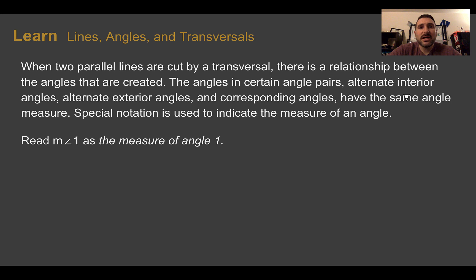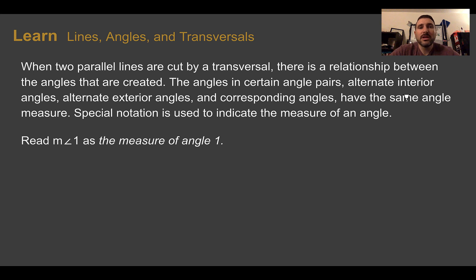When two parallel lines are cut by a transversal, there's a relationship between the angles that are created. The angles in certain angle pairs — alternate interior angles, alternate exterior angles, and corresponding angles — have the same angle measure. Special notation is also used to indicate the measure of an angle: if you see an M in front of an angle, you read that as 'the measure of angle one.'